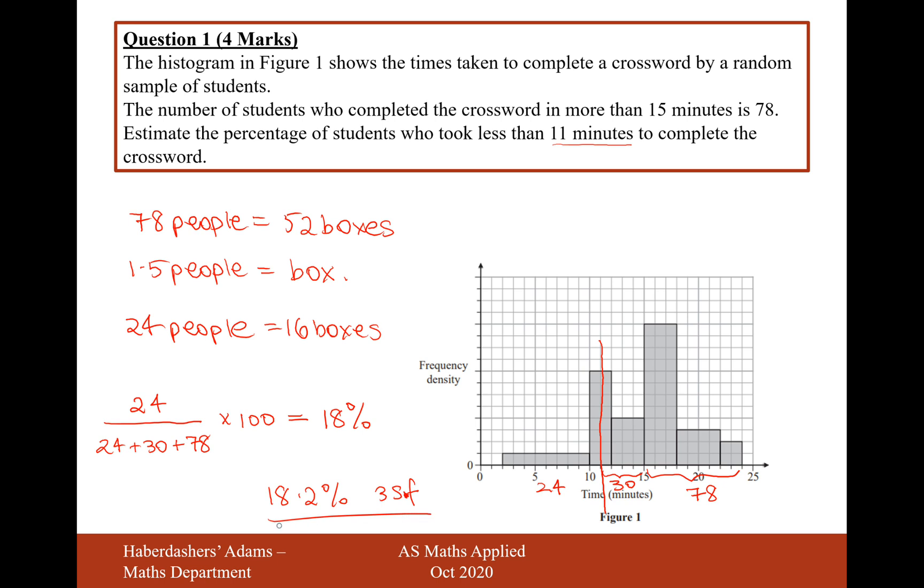So there we are. That's the answer for this question. Just a reminder that histograms will have area equals frequency. So you have to work out the area of each box as the key for this question. That's the answer for question one. We have four marks in total. Let's move on to question two.